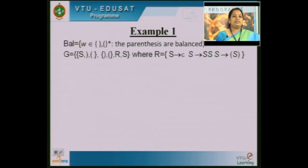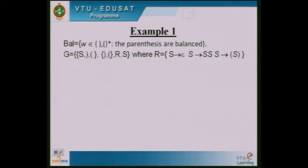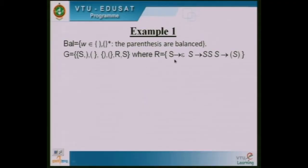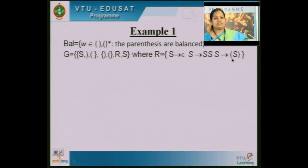Let us take some examples of ambiguous grammar. In the previous session we wrote the context-free grammar for balancing parentheses, where the set of rules are: S tends to epsilon, S tends to SS, and S tends to opening parenthesis S closing parenthesis.